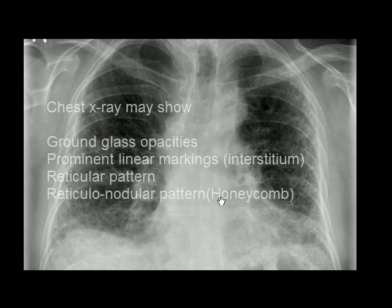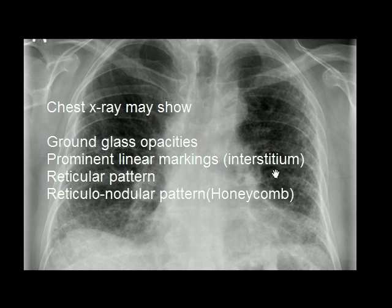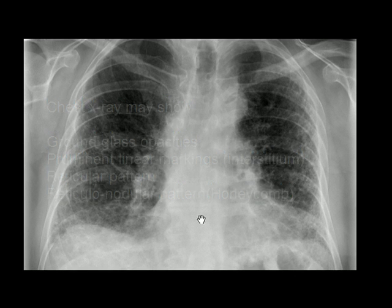Chest X-rays will show different patterns depending upon the stage: ground glass appearance, interstitial lines as in this case, and reticulonodular pattern. This X-ray is a very good example of a reticulonodular pattern.